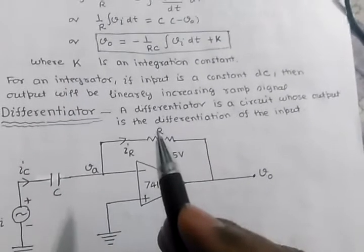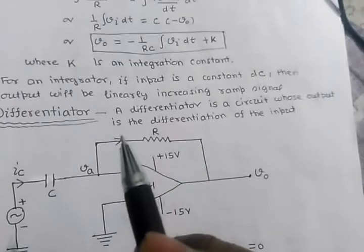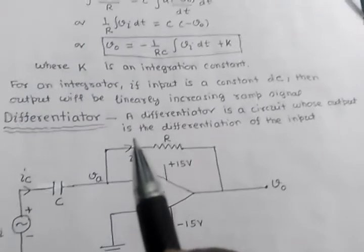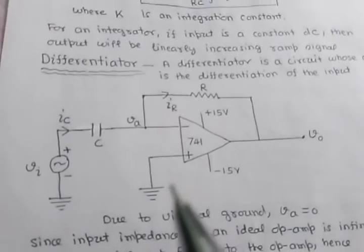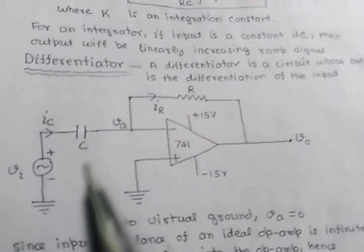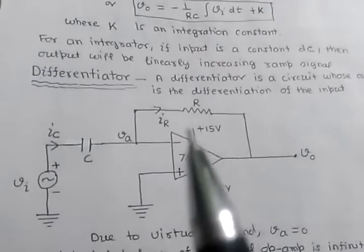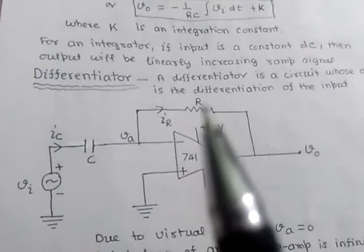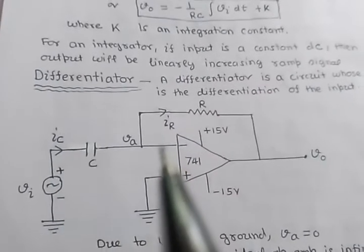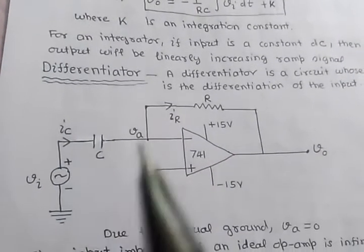Now we will find the expression for the output voltage of a differentiator. A differentiator is a circuit whose output is the differentiation of the input signal. This is the circuit diagram of a differentiator. The circuit of the differentiator is almost the same as the circuit of the integrator — only the positions of the capacitor and resistor have been interchanged. Here resistive feedback is used: a resistor R is connected between the inverting terminal and the output, and input is applied at the inverting terminal through a capacitor C.